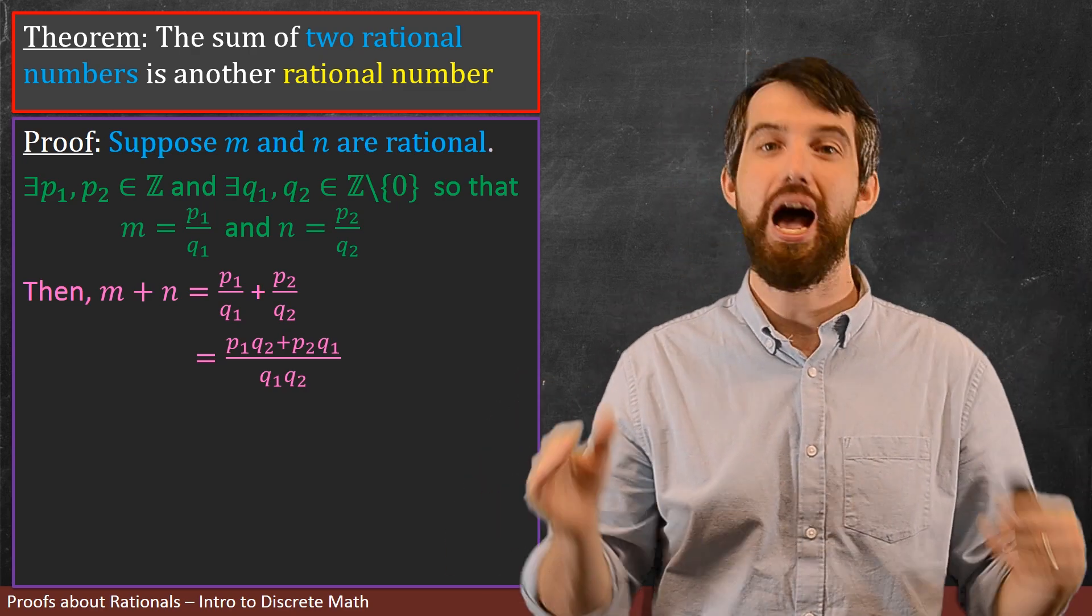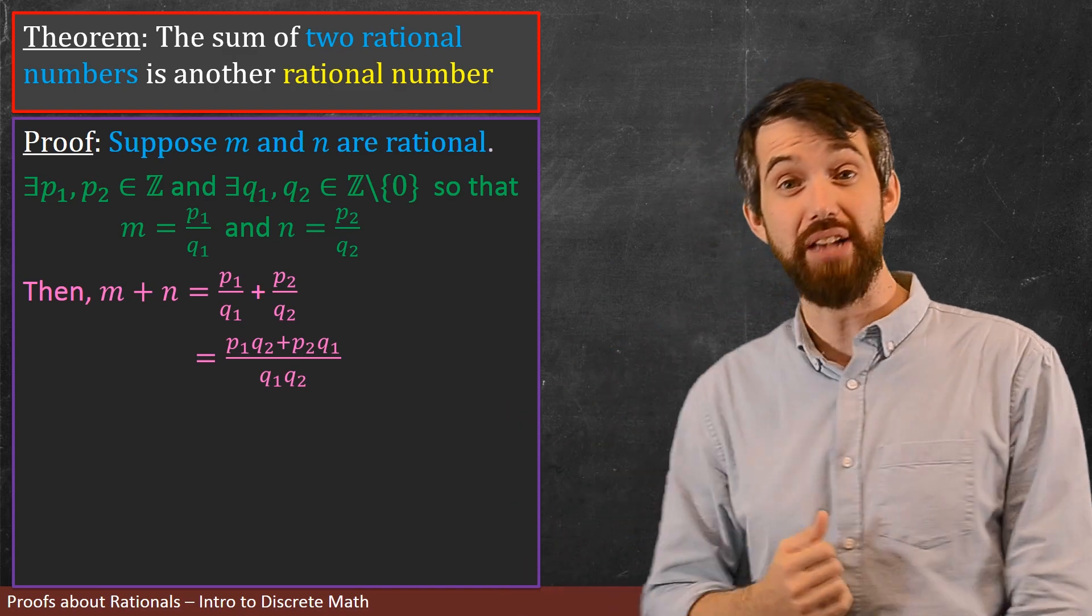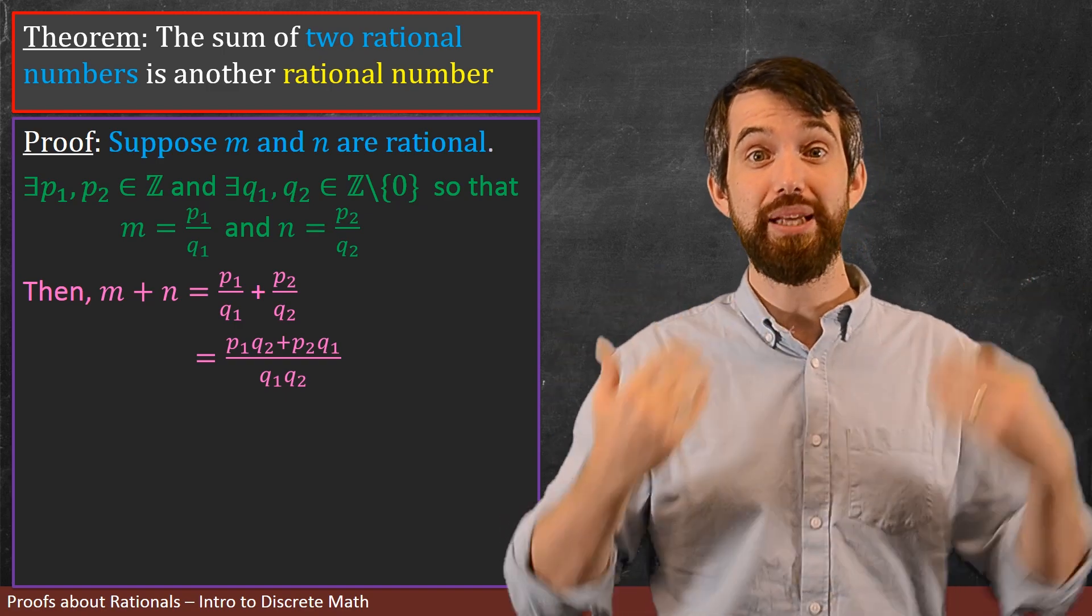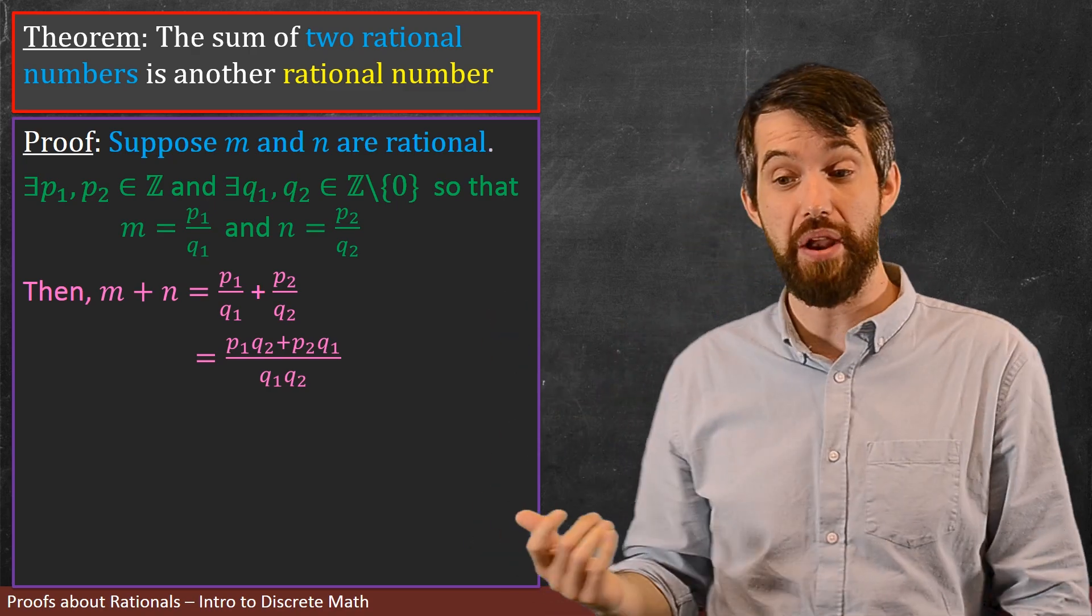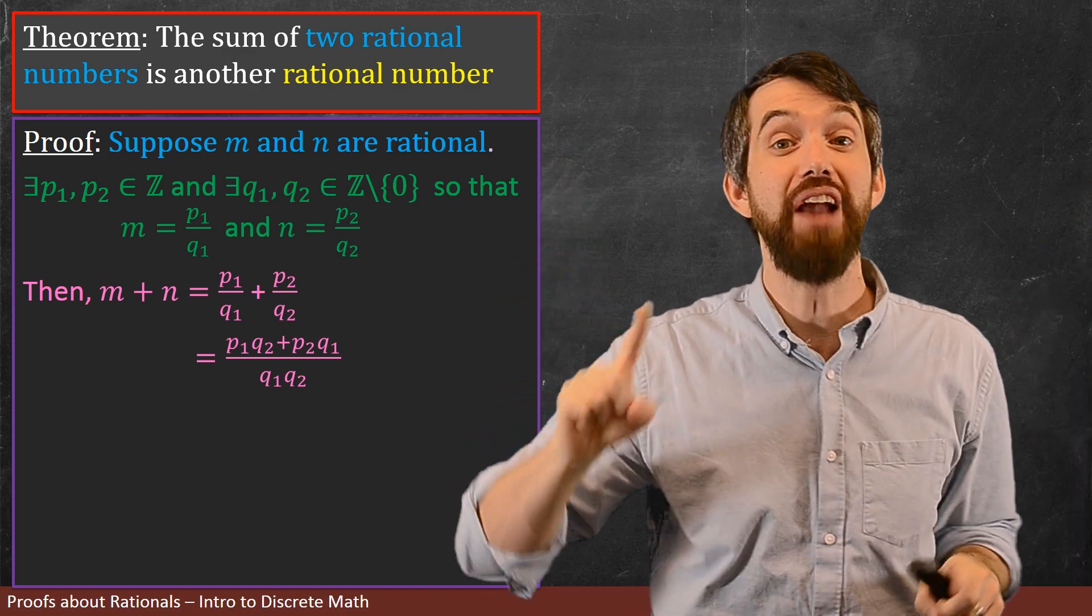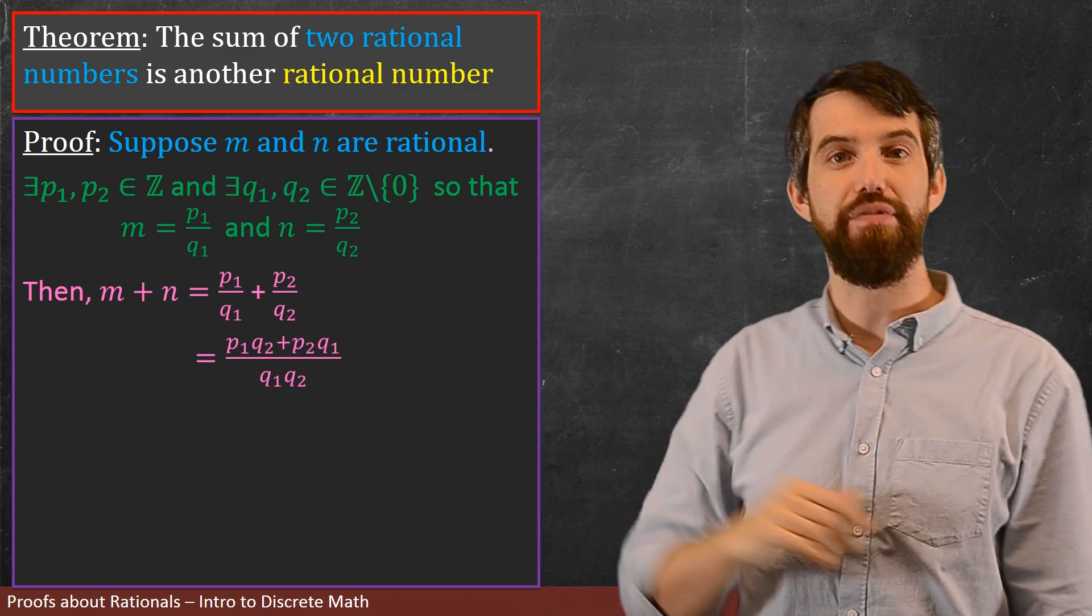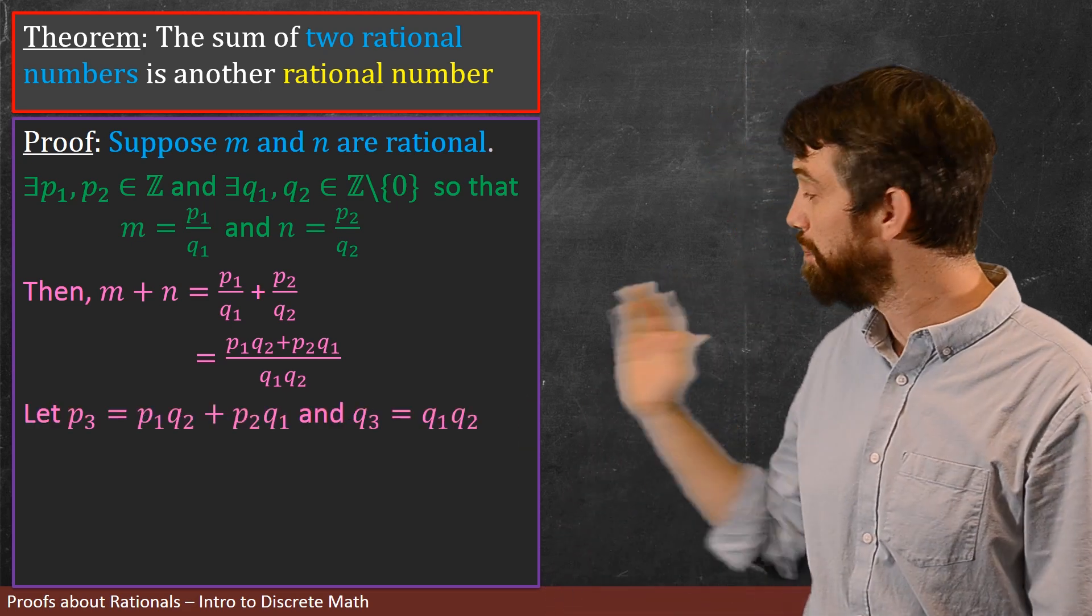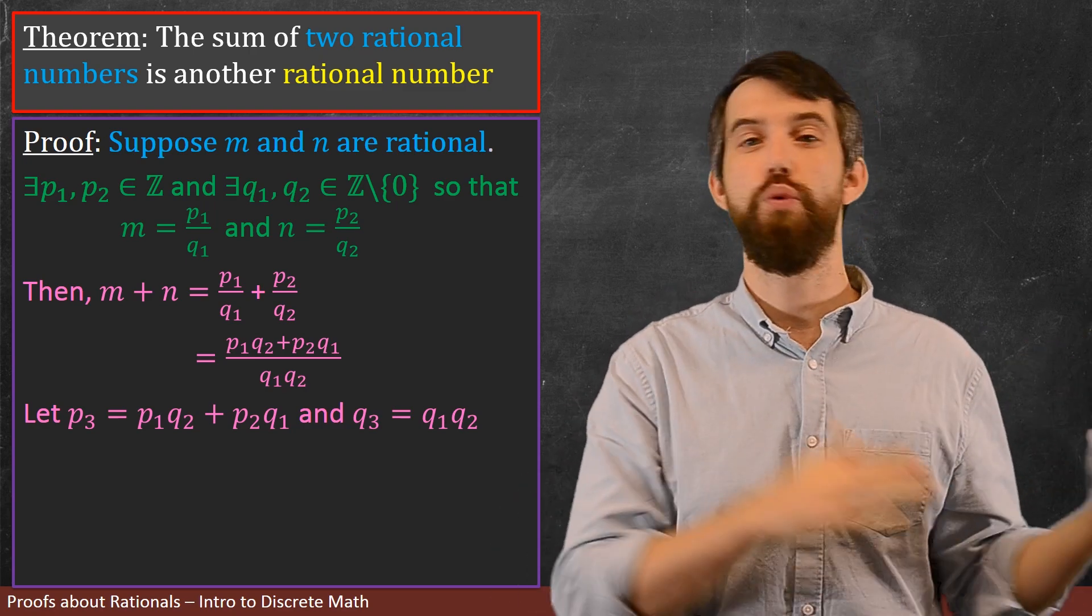Now, why did I do that? I wanted to have it looking like a fraction, and now it kind of does. There's a top, there's a bottom. So, if I really want to conclude that m plus n is going to be a rational, I needed a top and the bottom, and there they are. So let's define a p3 and a q3, my final top and my final bottom, where p3, the top is going to be the top of this, and q3 is going to be the bottom. So what do I get? p3 is the p1q2 plus p2q1, and q3 is the q1q2.